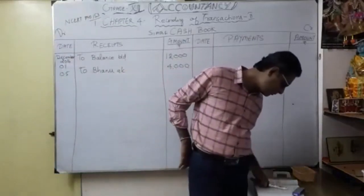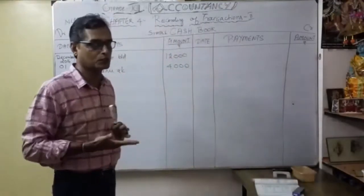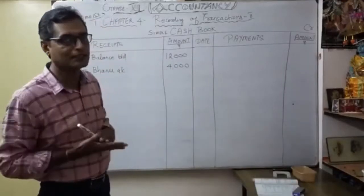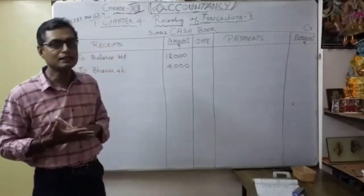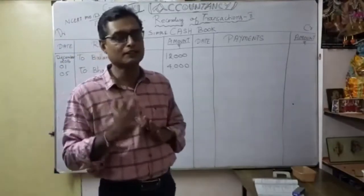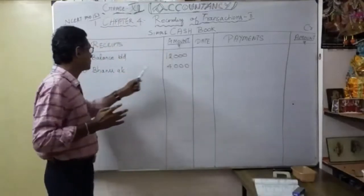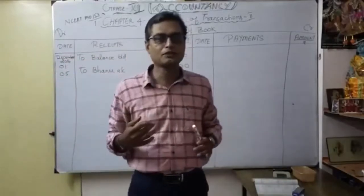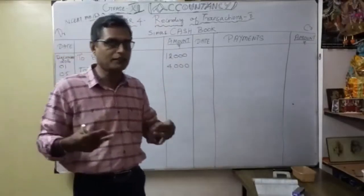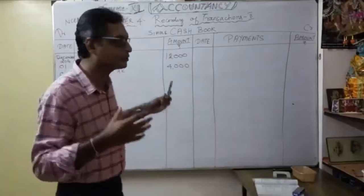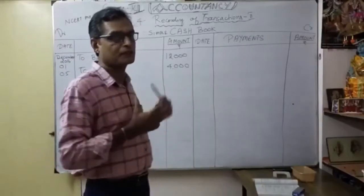The second transaction: December 5th — cash received from Banu four thousand. First, you have to pass general entries. What is the entry? Cash account debit to Banu account. Why you have debited cash account? It is coming under here — debit part comes in. And Banu account is credited because it comes under personal account — the personal account rule is 'credit the giver.' Banu is the person who is giving the money. So: cash account debit to Banu account 4000.